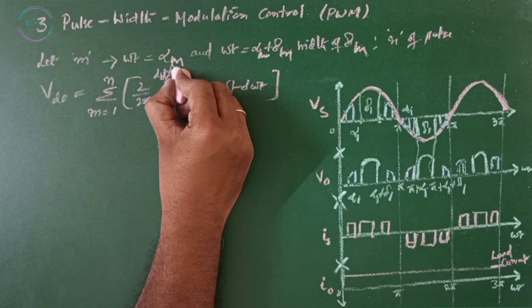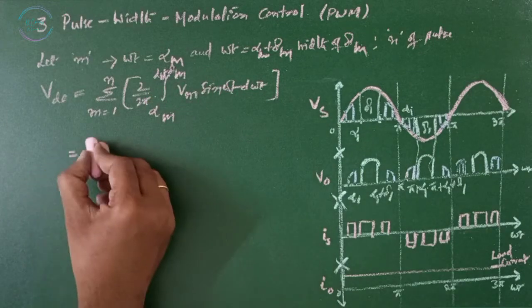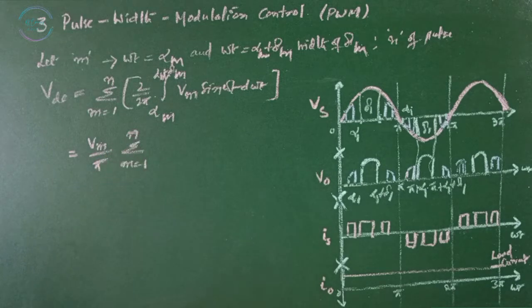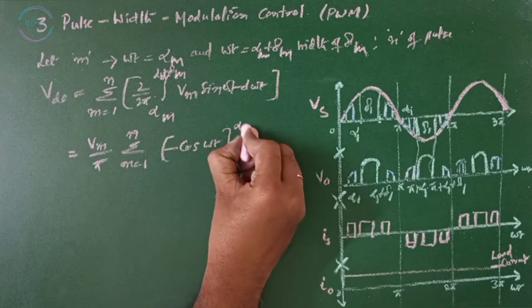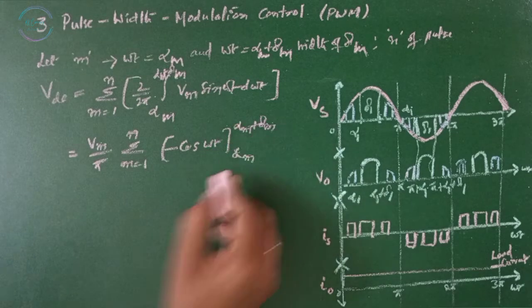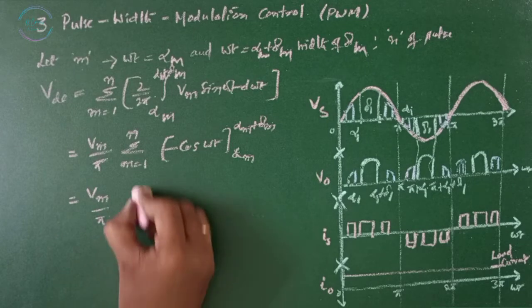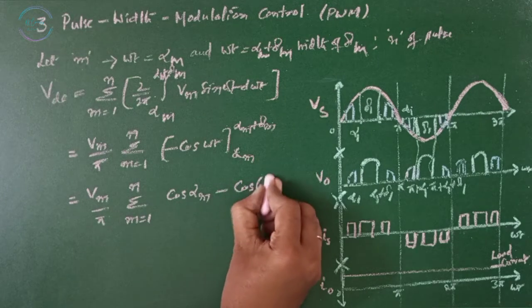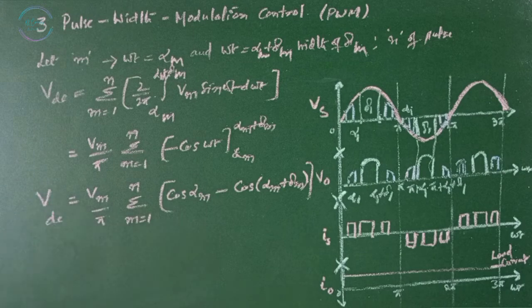To make it clear that this alpha 1 belongs to m, I am keeping this as alpha m. Then this one has alpha m delta m with the relation delta m. This will be alpha m, alpha m and delta m. When you solve this, you are going to get Vm by pi sigma m 1 to n minus cos omega t with the limits alpha m plus delta m to alpha m. That equals to Vm by pi sigma m 1 to n cos alpha m minus cos alpha m plus delta m. This is Vdc.